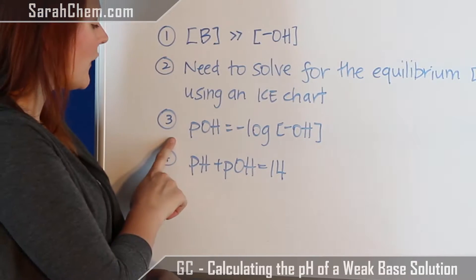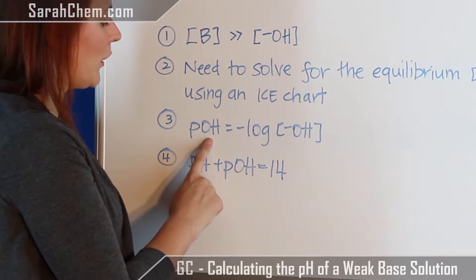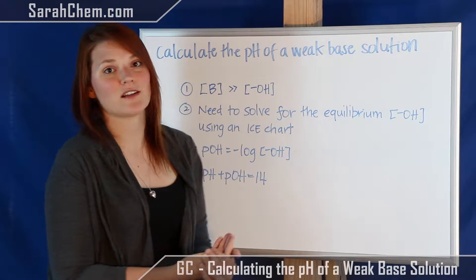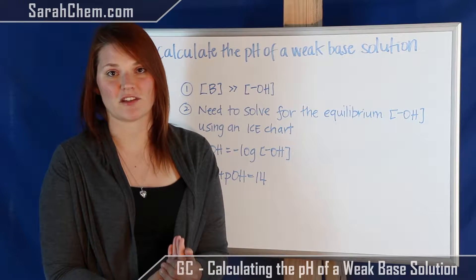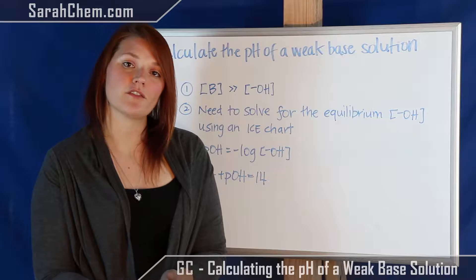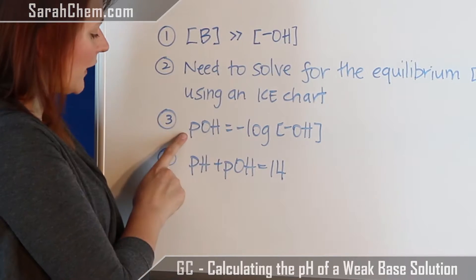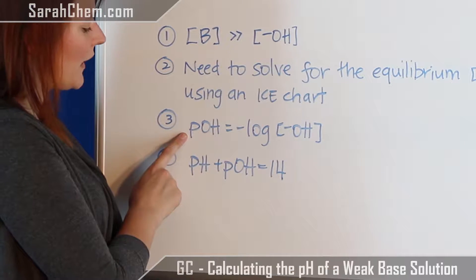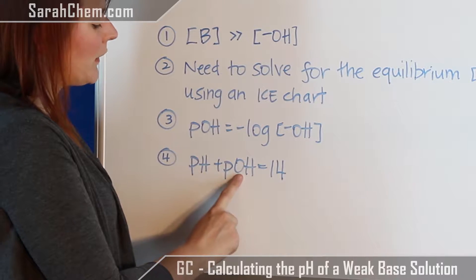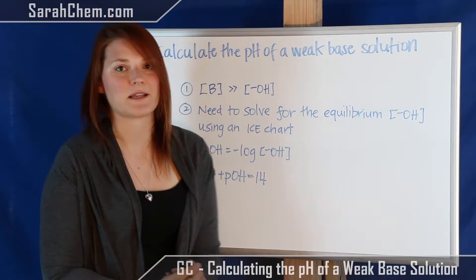The third thing is that we want to know how to solve for pOH, and that is going to be the negative log of the hydroxide concentration. Lastly, because we're solving for pH, it's important to understand the relationship between pH and pOH, which is that pH plus pOH is equal to 14.